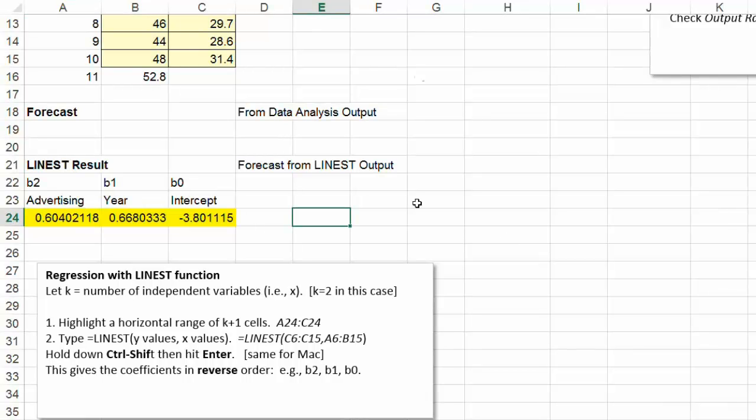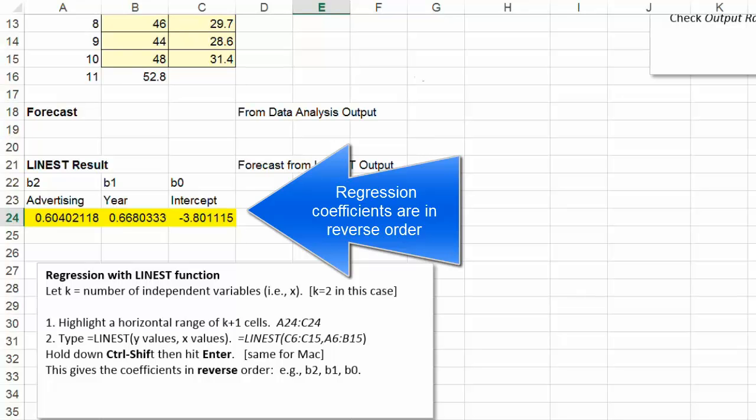Now here, the one thing to remember is that, for some strange reason, it gives you the numbers in a reverse order. It goes backwards. So it gives you the B sub 2 and then B sub 1 and then B sub 0. So I labeled the cells in this way so I remember it's going to be in this order. It's not in B0, B1, B2, but it's in B2, B1, B0. So you've got to remember this. So it's not going to be in order, so I did a backwards order.